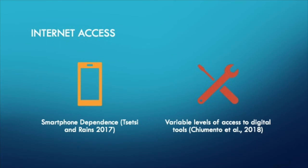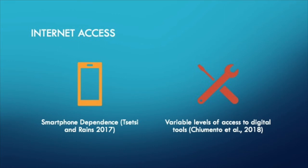Returning to the earlier point about internet access being a nebulous term, we can see that access to the internet means different things. It can mean that someone has high-speed broadband at home and work and can therefore be online at almost any time. For some people, home access might come with slow internet speeds and data caps. It can also mean that someone is only able to access the internet via a smartphone with mobile data, and is therefore restricted on the amount of data that they can access.